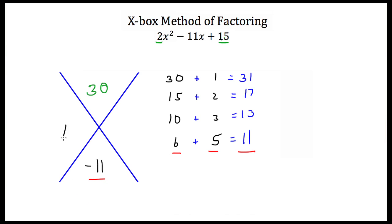So 6 and 5. But since this is a negative 11 and I want these two numbers to add to get this, I have to make both of these negative: negative 6 and negative 5. Negative 6 plus negative 5 gets us negative 11, and negative 6 times negative 5 gets us positive 30. So I've found my factors.